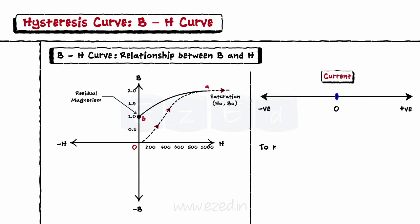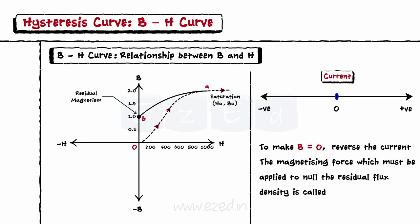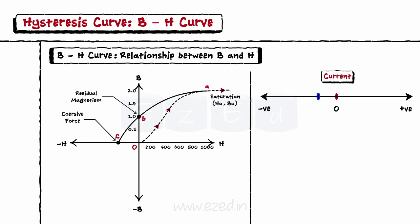To reduce the flux density at point B to zero, we need to reverse the current flowing through the coil. The magnetizing force which must be applied to null the residual flux density is called cohesive force. This cohesive force reverses the magnetic field till it reduces to zero at point C. An increase in the reverse current causes the core to be magnetized in the opposite direction. An increase in this magnetization current will cause the core to reach the negative saturation point D on the curve, which is symmetrical to point B.